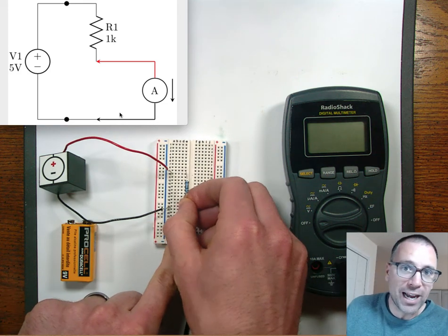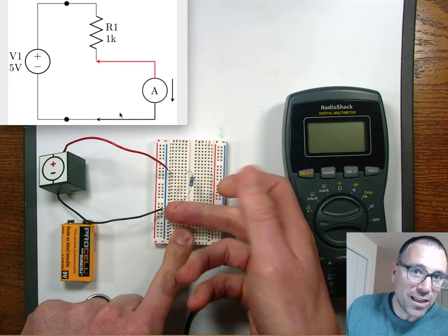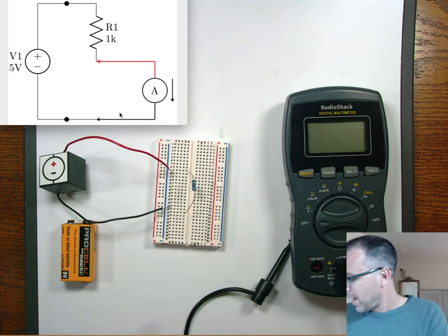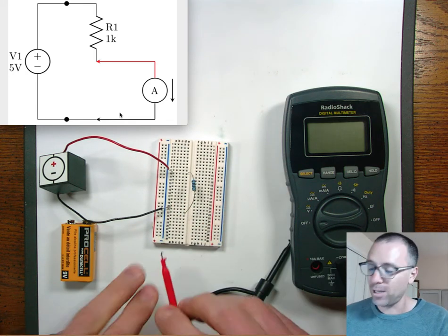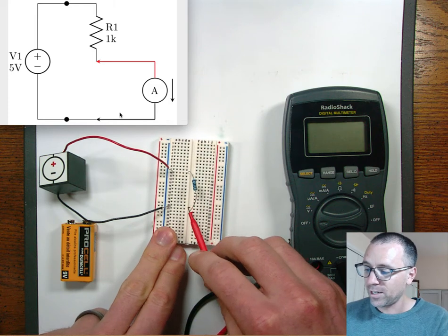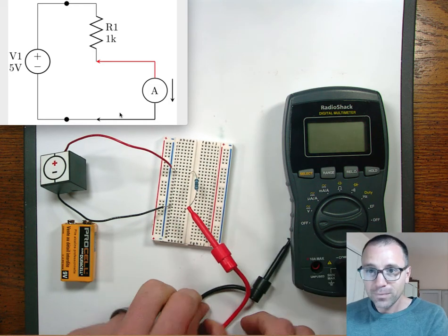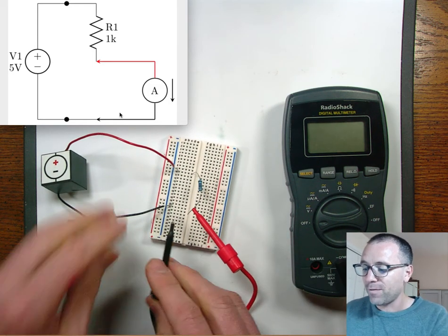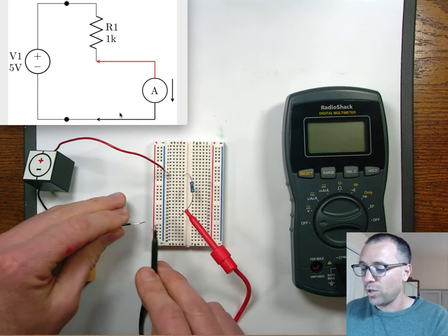So the first thing that we're going to do is we're going to kind of disconnect. So you can see that I took that lead out. I take the positive lead of my multimeter and connect it to that lead there. Here, I take the negative end of my multimeter and connect it to the other lead.